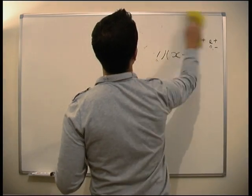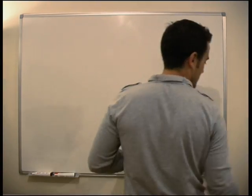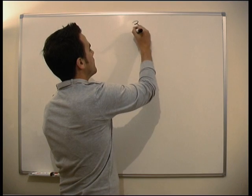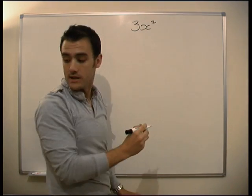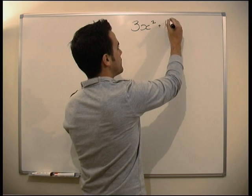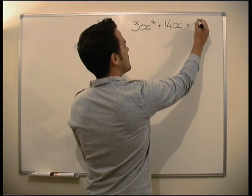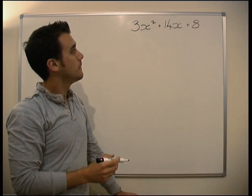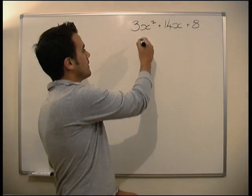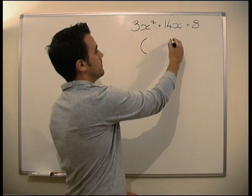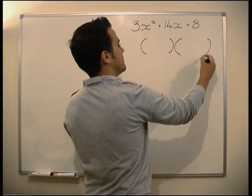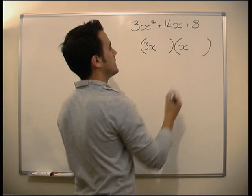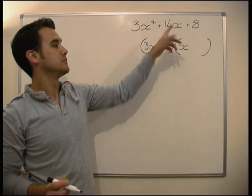One more practice question then you can go and do these. The next one is slightly more difficult. We've got 3x squared plus 14x plus 8. This is a tricky one because we know we must have a 3x in here and an x in here. Because we know we've got two positives here, which means we must have two positives in here.